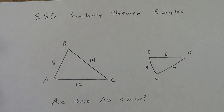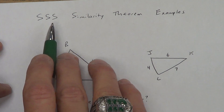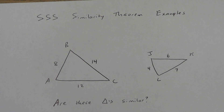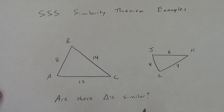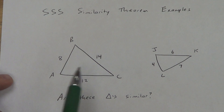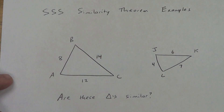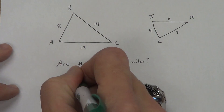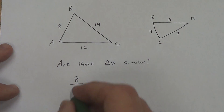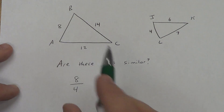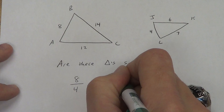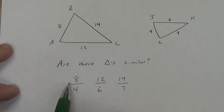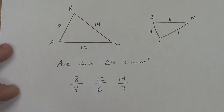Are these triangles similar? Remember, the Side-Side-Side Similarity Theorem says all three sets of sides have to be proportional. We're going to set up that proportion using all three sets of sides. The main thing is you've got to think about which sides go together. Easiest way: small with small, medium with medium, big with big. The smallest here is 8, so 8 over 4. Medium is 12 over 6. Biggest is 14 over 7. Keep the same triangle in the numerator every single time — stay consistent.